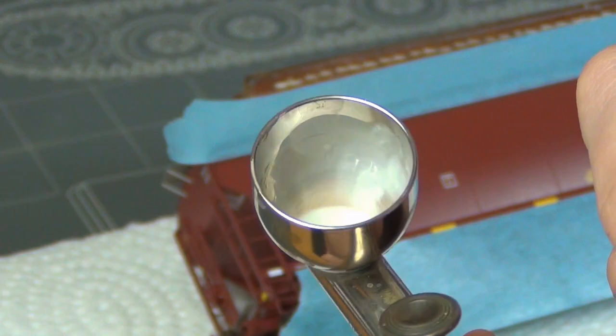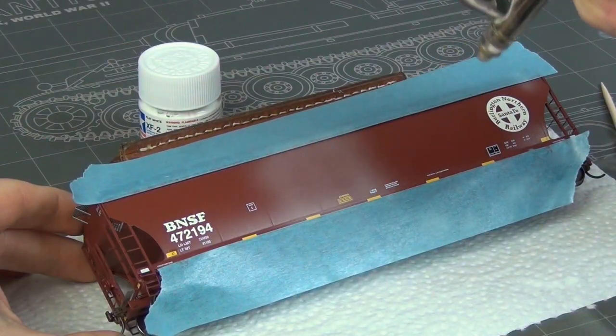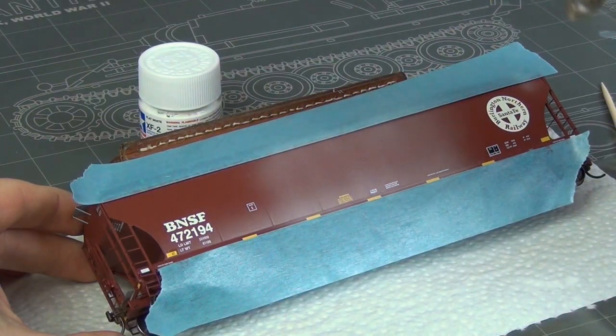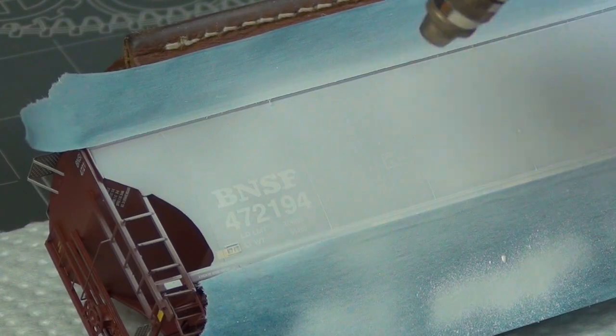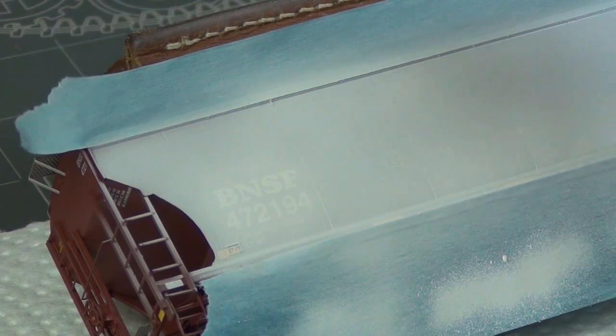Now we're going to apply some white Tamiya paint. I'm not applying this super heavy because the hairspray is applied so that I can chip the white paint off and make some wear and tear. So I'm not going for full coverage but I'm trying to make it opaque white.